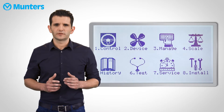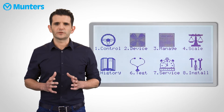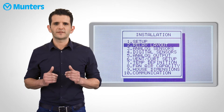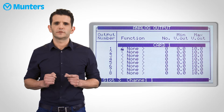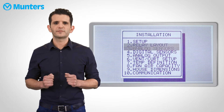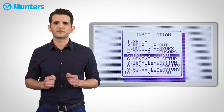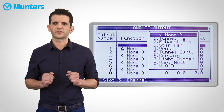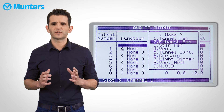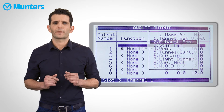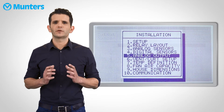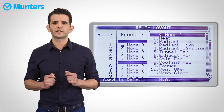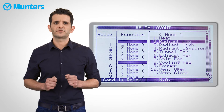Press Menu on the main screen, navigate to Installation menu, and then select Analog Output. In this menu, you can define any device as variable speed device. For example, Exhaust Fan 1. Now let's navigate back to the Relay Layout and try to define an exhaust fan.